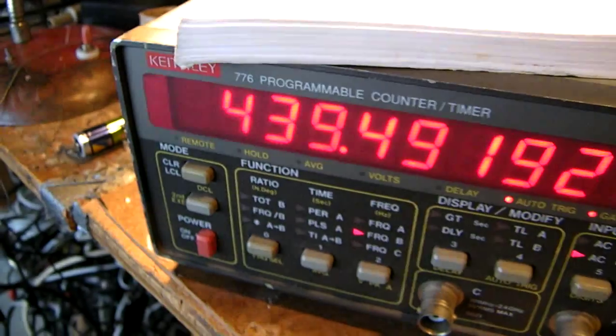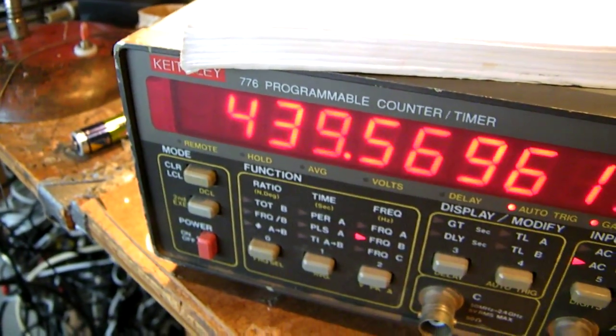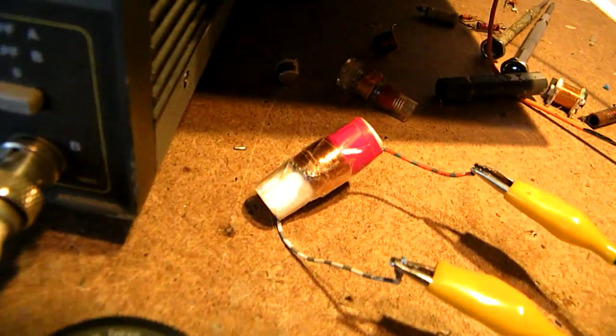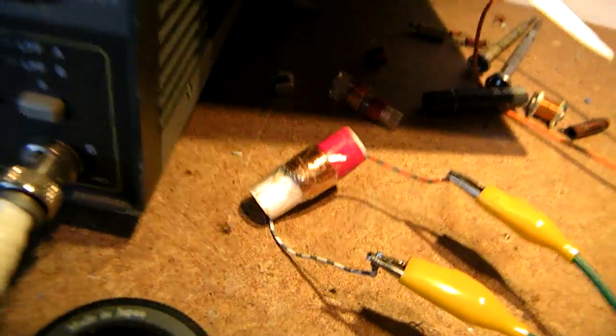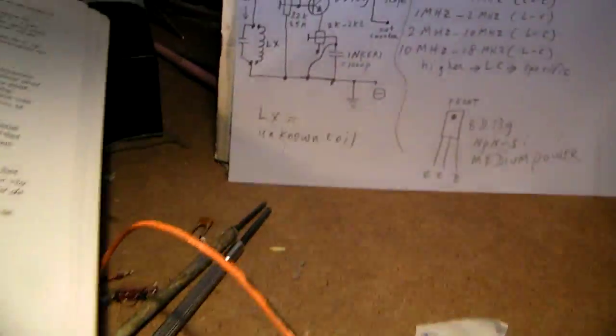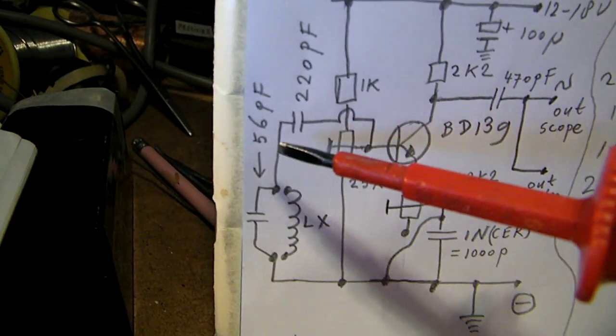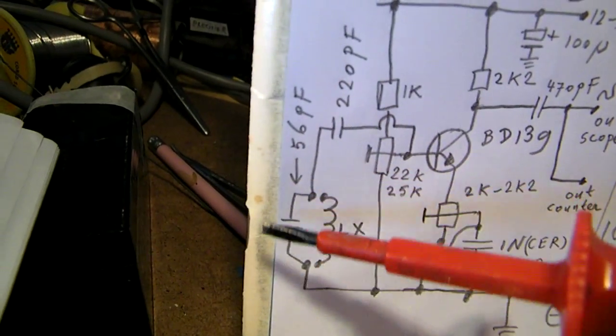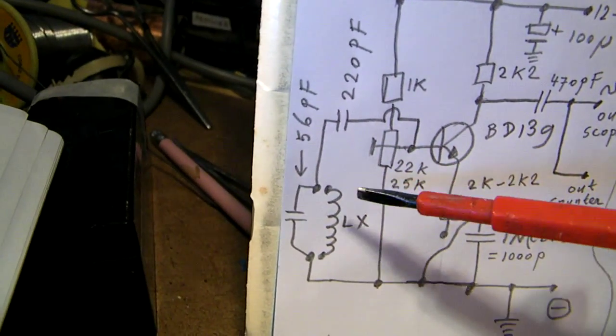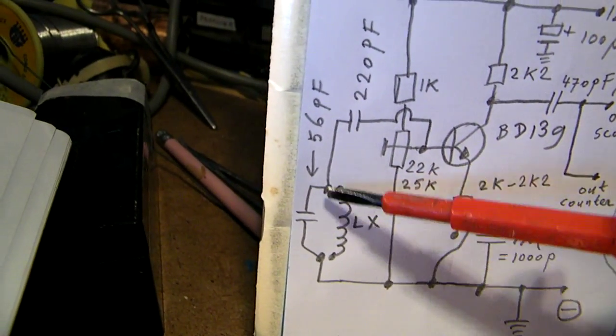When you know a few factors that you measure, for instance here, we measure 4.39 kilohertz. We have this coil and the capacitor here that bridges that coil is a fixed capacitor from 56 picofarad. So we know these two values. We know the capacitance value, we know the frequency.